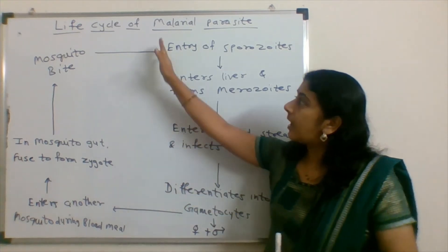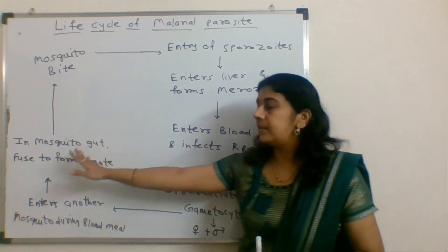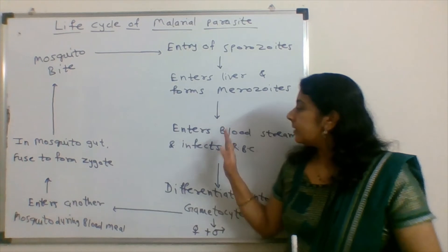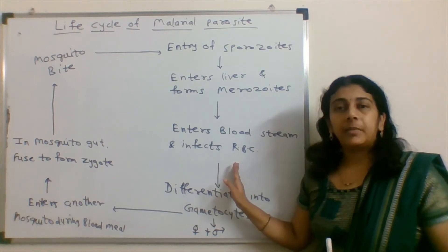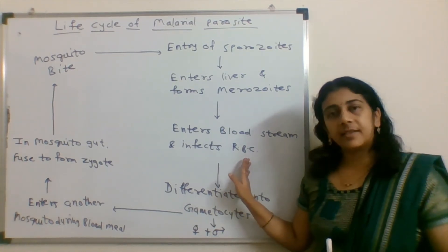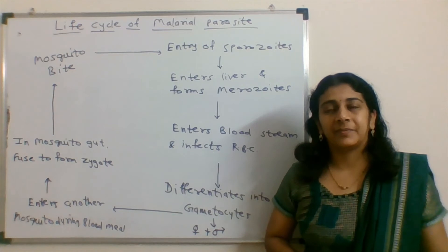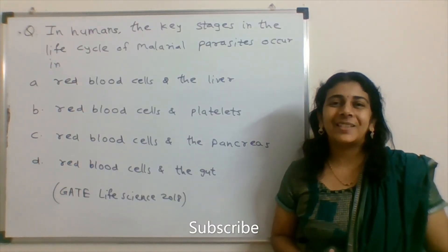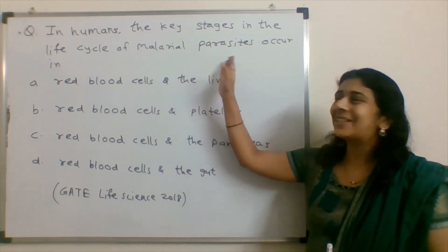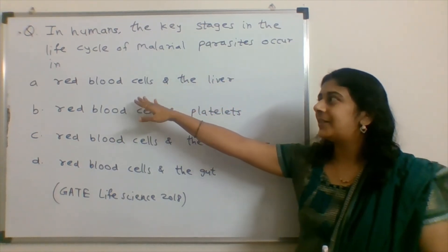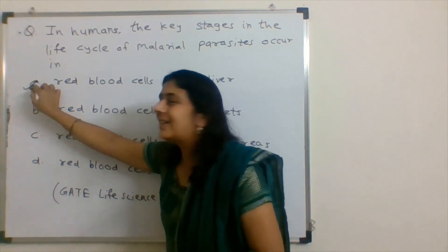In this way, half of the life cycle takes place in the human body and half in the mosquito gut. In the case of humans, hepatocytes — that is, liver cells — and red blood cells are involved during the infectious cycle of the malarial parasite. So we come to know that in humans, the key stages in the life cycle of the malarial parasite occur in red blood cells and the liver, making option A the correct answer.